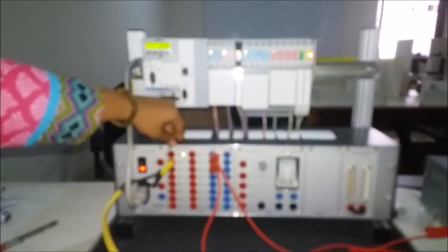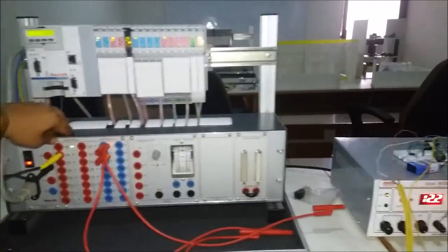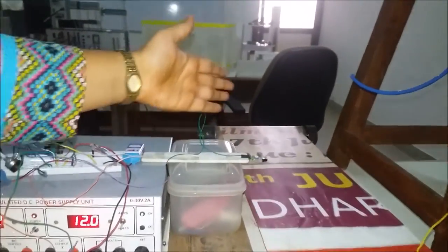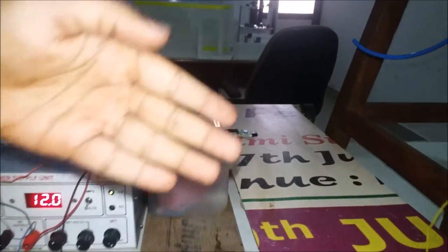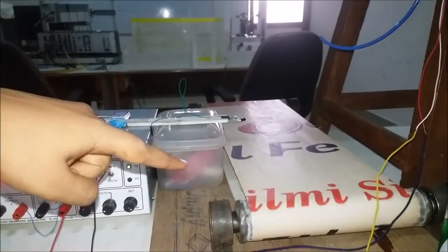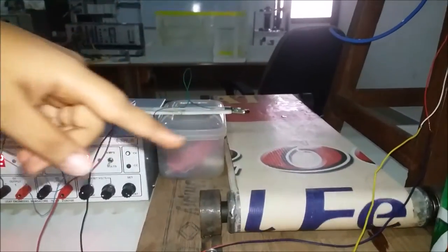Whenever we switch on the power supply, since there is no object in front of the IR sensor, the conveyor belt will be continuously moving. You can observe that the conveyor belt is continuously moving.